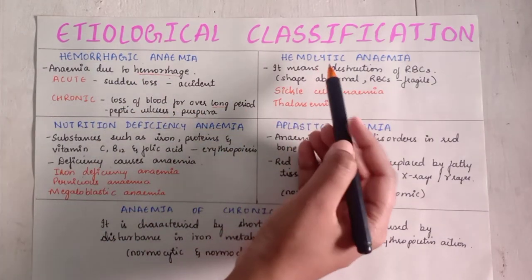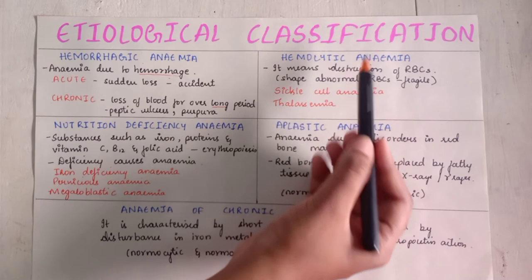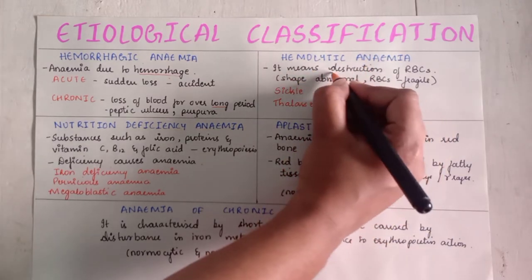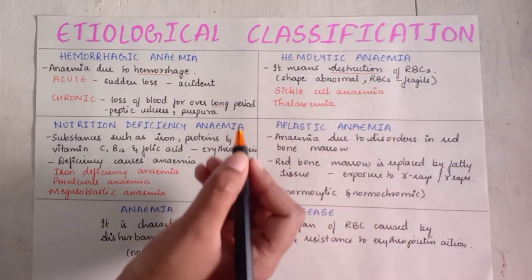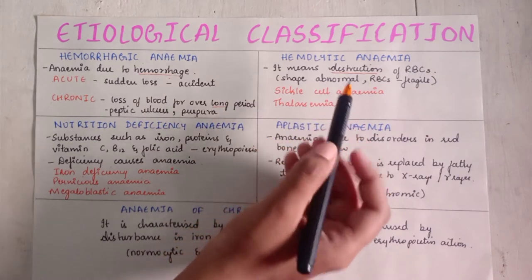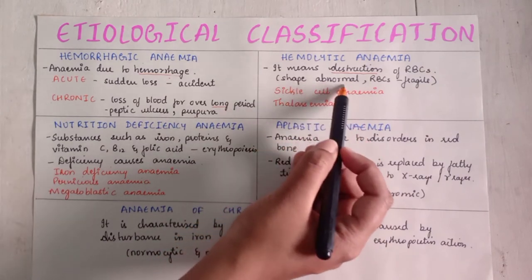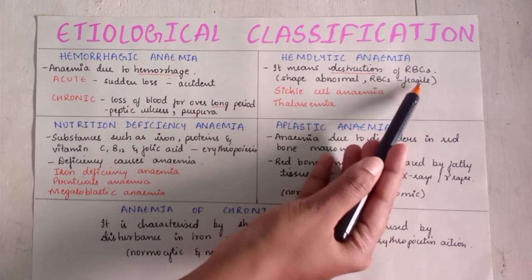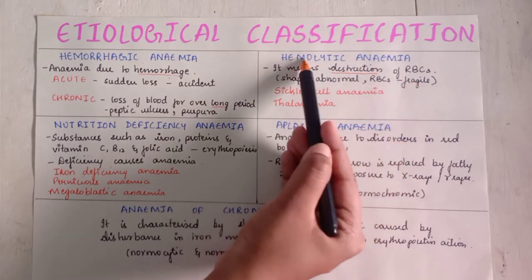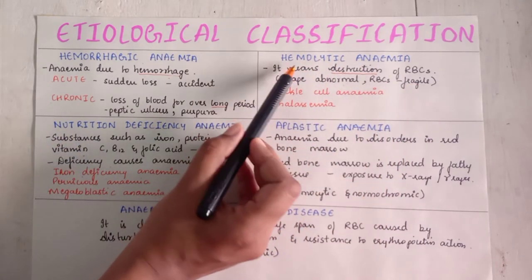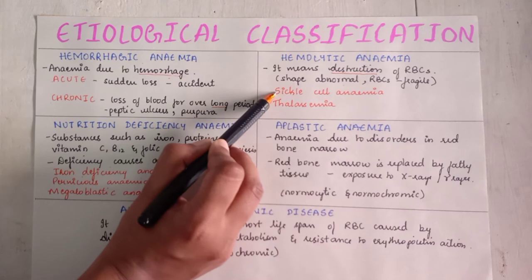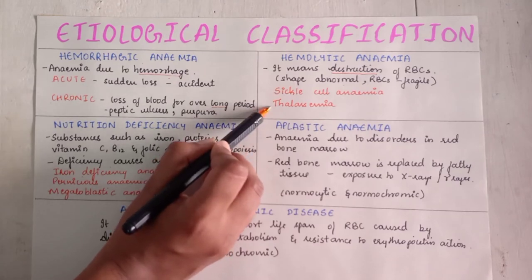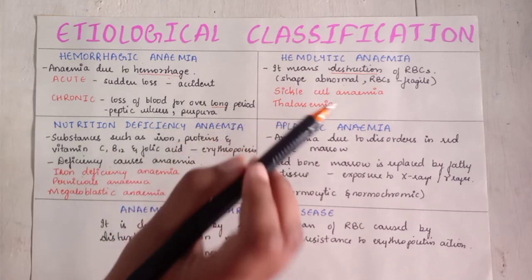Second: hemolytic anemia. Lysis means destruction, so hemolytic means there is destruction of RBCs. Because of abnormal shape, the RBCs become fragile, which leads to hemolysis. Sickle cell anemia and thalassemia come under hemolytic anemia.